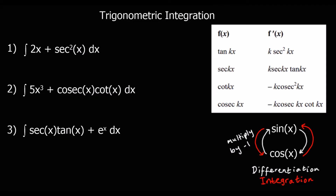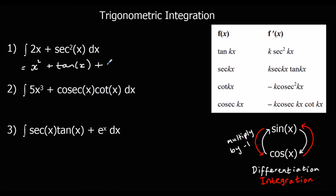Let's look at these questions. Question 1: the integral of 2x plus sec² x. For 2x we integrate normally — add 1 to the power and divide by the new power — so that gives 2x² over 2, which is x². Then sec² x integrated gives tan x. Don't forget to plus c.